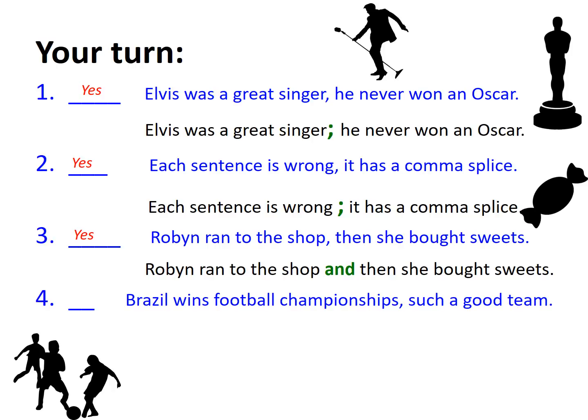Finally: 'Brazil wins football championships, such a good team.' This involves a comma splice because these are two independent clauses. The best grammatical fix would be: 'Brazil wins football championships and is such a good team.' Here I'm adding two words as a conjunction, not simply one.